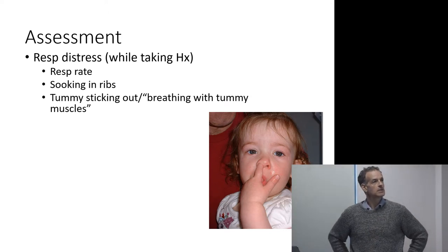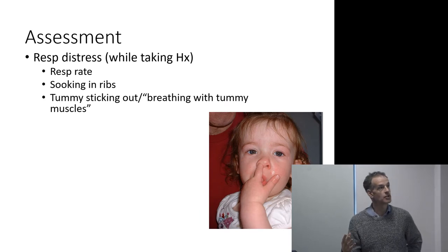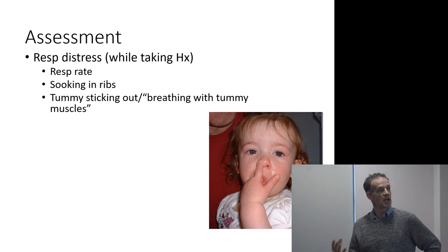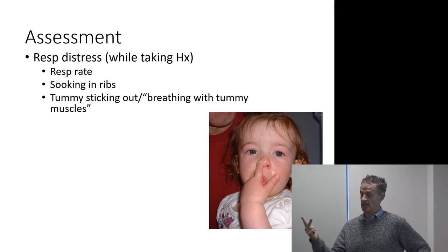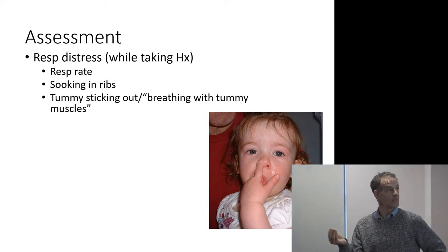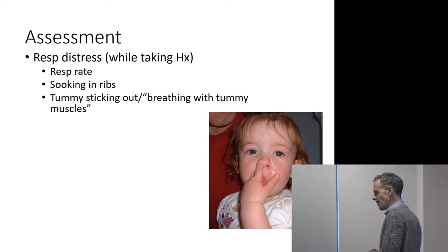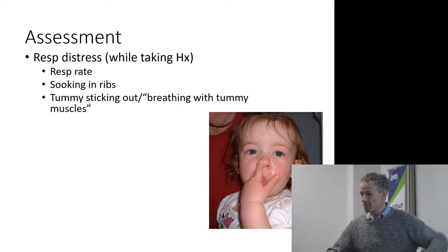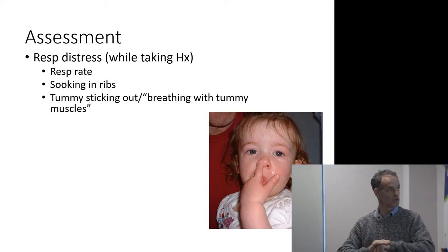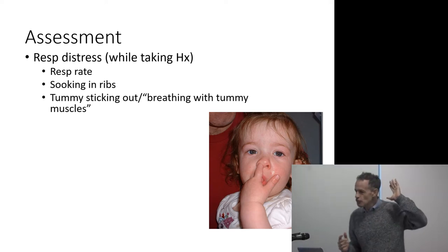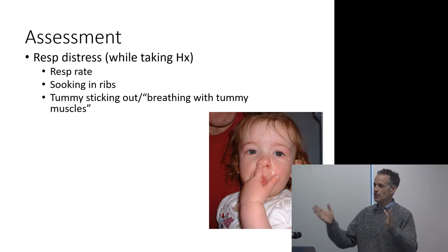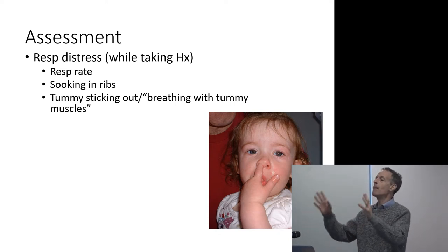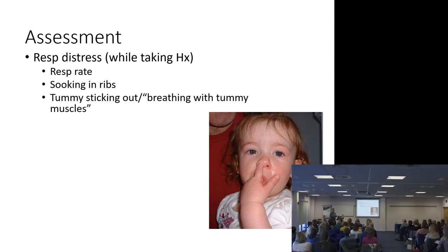Respiratory assessment of a child is what we all do inherently when we're just taking a history. By the time mum has finished talking about the child coughing and spluttering, you've already worked out whether the child's respiratory rate and respiratory effort are normal or not. In kids, parents will often talk about the tummy sticking in, ribs sticking in, breathing with the abdominal muscles. If a child is breathing with its tummy muscles and its ribs are sucking in, it's working pretty hard. You have to be down to about 30% of lung function before you're short of breath at rest.